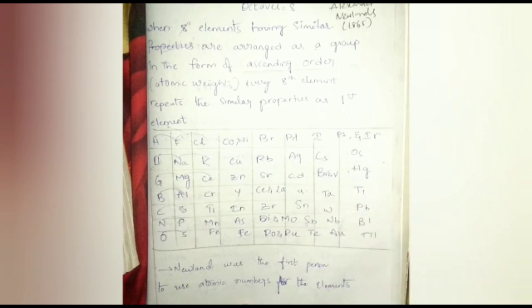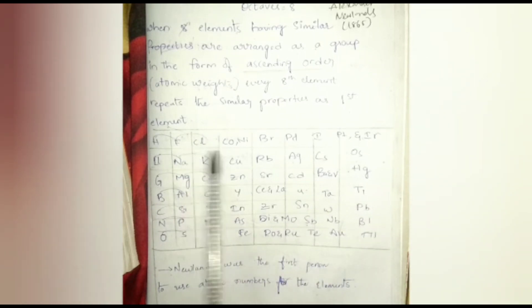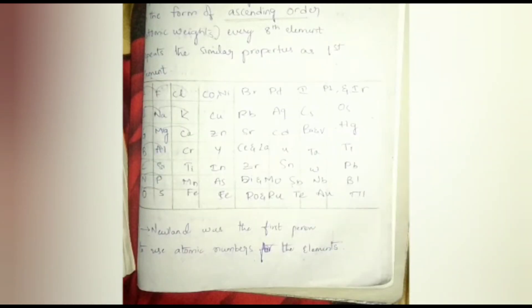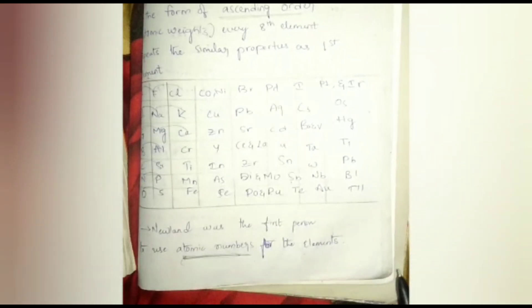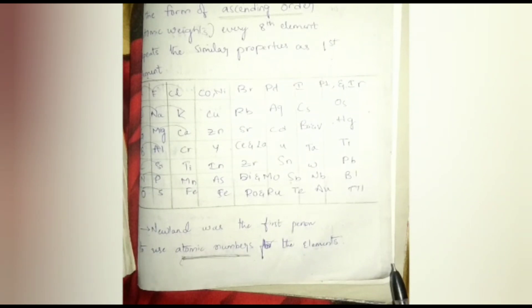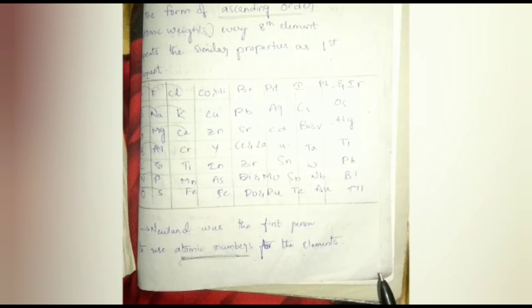Newlands' Law of Octaves seemed to be true only for elements up to Calcium. Another interesting point: John Alexander Newlands was the first person to use atomic numbers for the elements. Earlier scientists — Döbereiner, geologist de Chancourtois — all used atomic weights, but Newlands used atomic numbers for the elements.